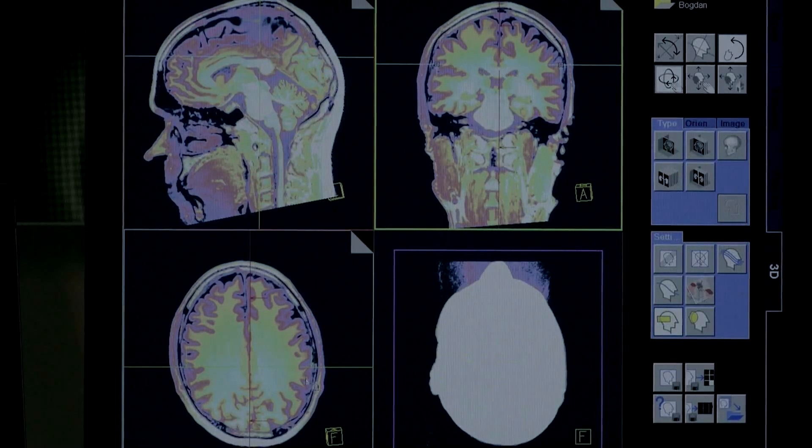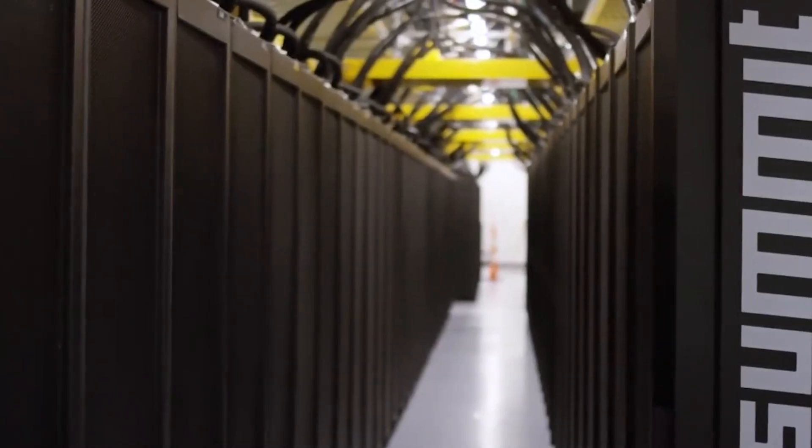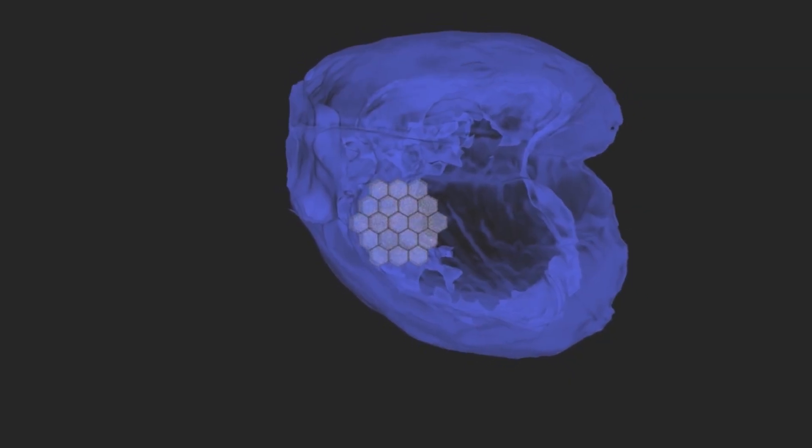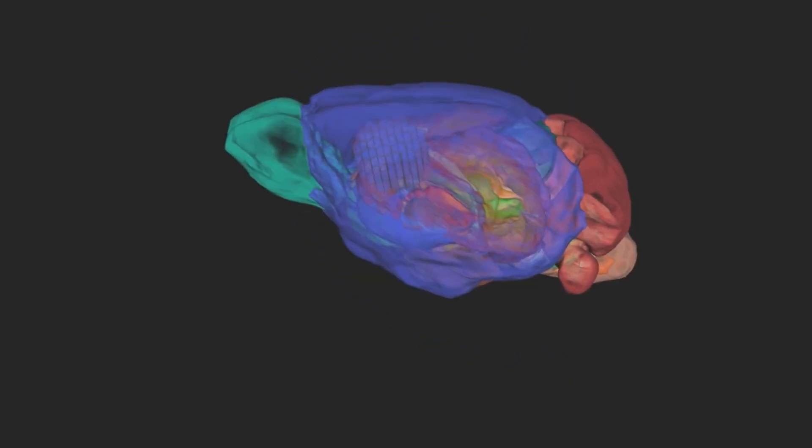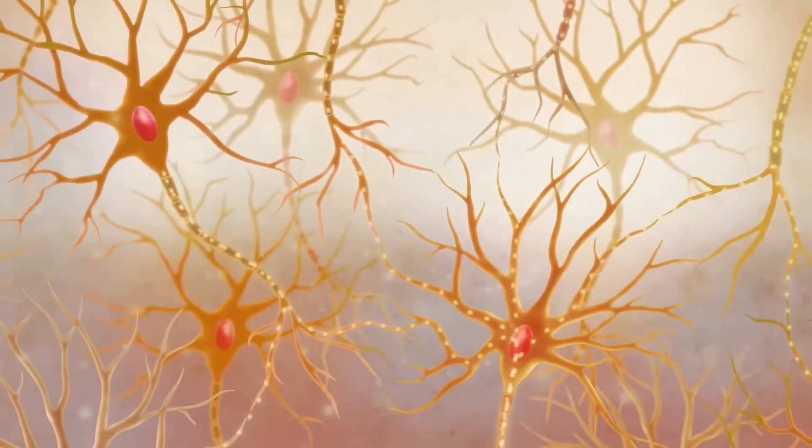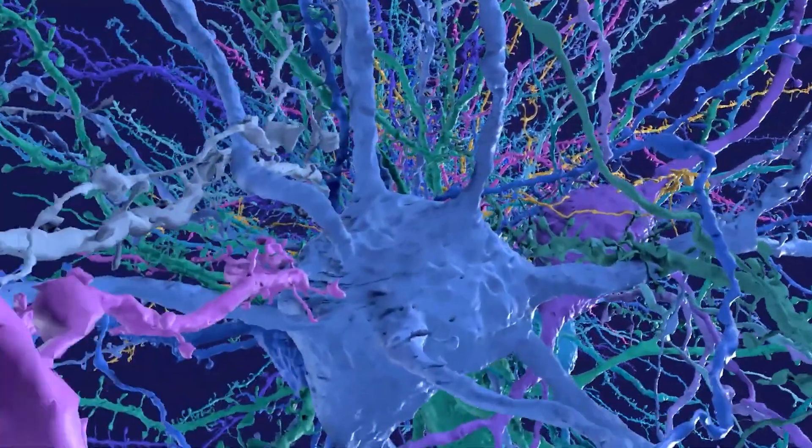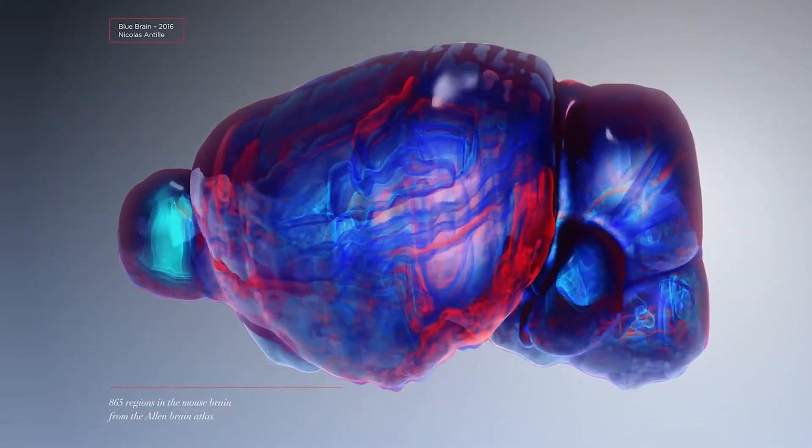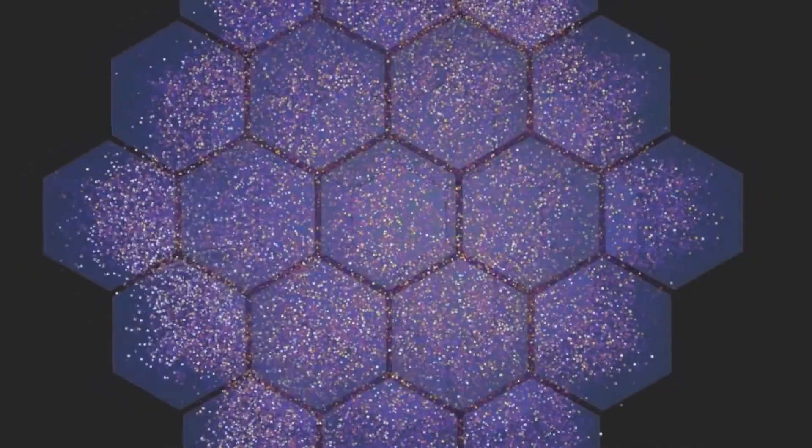Next, the data is digitized, transformed into binary language that the supercomputer understands. The Blue Gene supercomputer then uses this data to generate a three-dimensional model of the brain. Each neuron, each synapse, every tiny detail is painstakingly reproduced to create a biologically realistic virtual model.